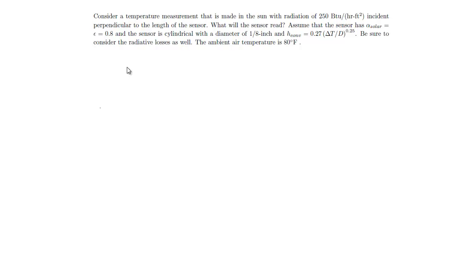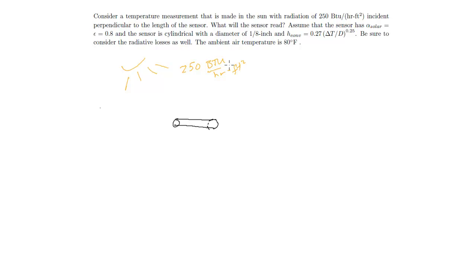Let's draw this situation out. We have a cylindrical sensor. We're going to have some solar radiation coming in at 250 BTU per hour foot squared. We have the ground and an ambient outdoor air temperature of 80 degrees Fahrenheit.